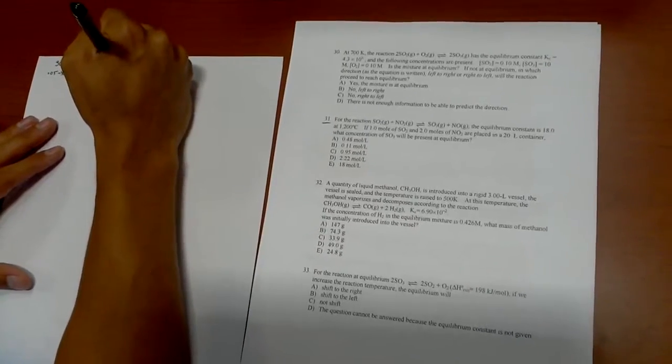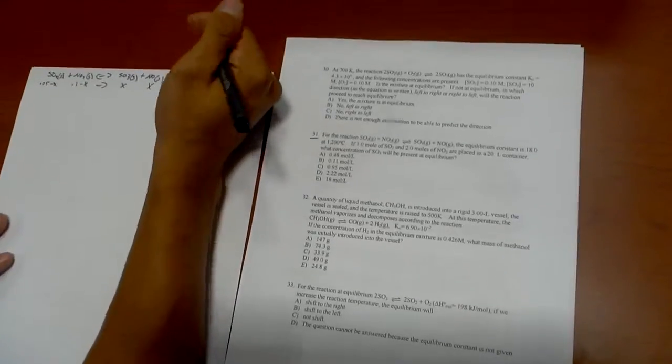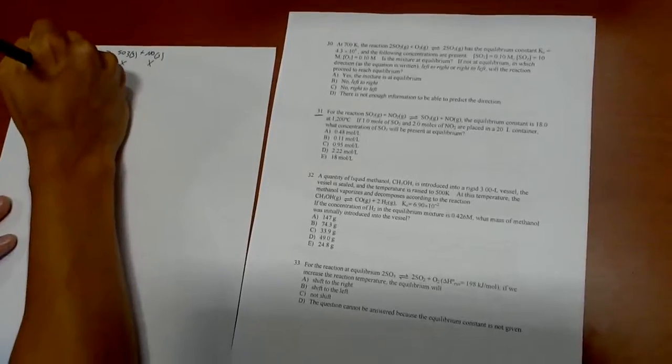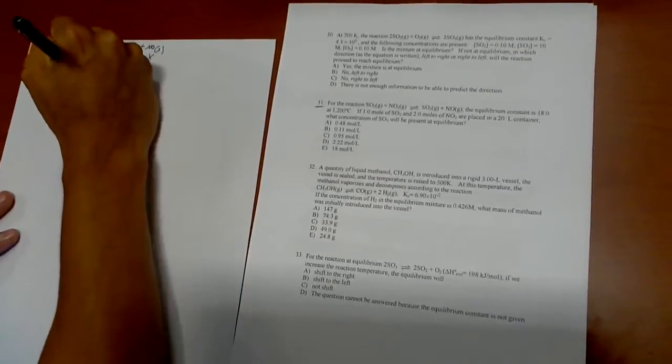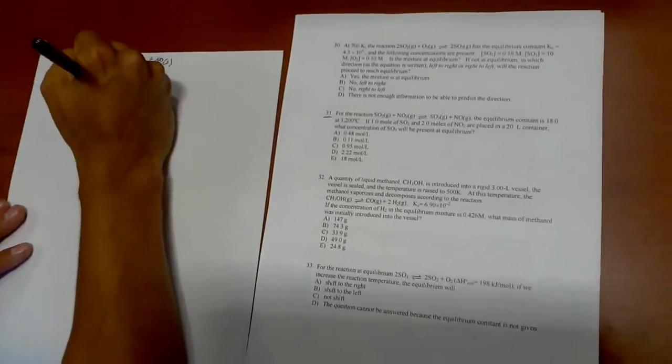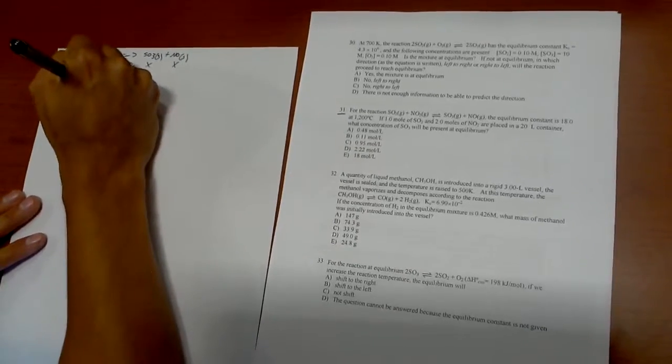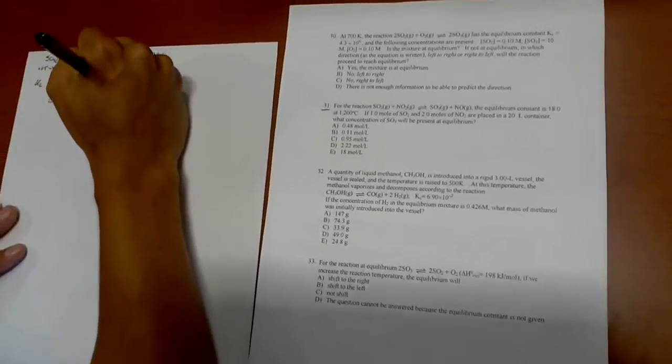And then what we don't know is x and x. So if we use the Kc we're going to get SO3, the concentration of SO3, times concentration of NO over SO2...